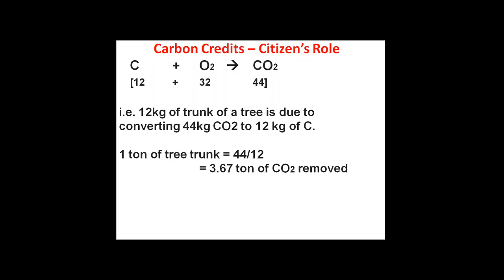One ton of CO2 removed equals one carbon credit. Just like in the semester system we get credits — a lab gives 2 credits, a 3D subject gives 4 credits, a project gives 12 credits — depending on importance, you get certain credits. Similarly, based on how much CO2 you reduce through your activities, you get a carbon credit. A tree gets one credit if it removes one ton of CO2. So if a tree has a trunk weighing one ton, that is due to 3.67 tons of CO2 removal from the atmosphere.